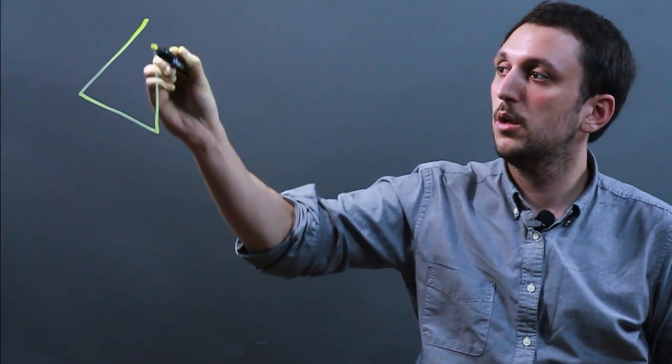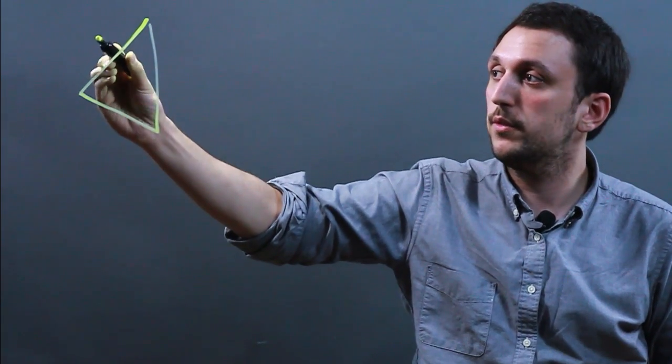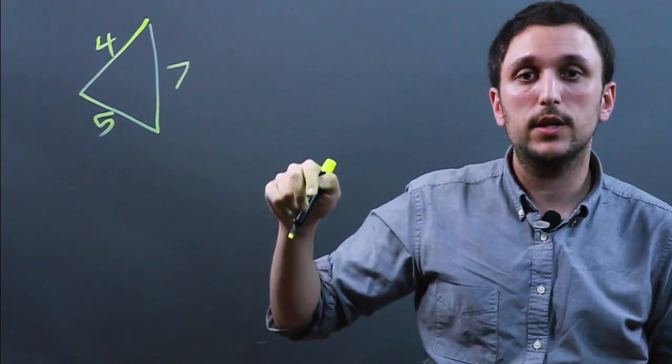The reason is a scalene triangle is a triangle in which all three sides are not equal. So if this one's four, and this one's five, and this one's seven, that means it's scalene.